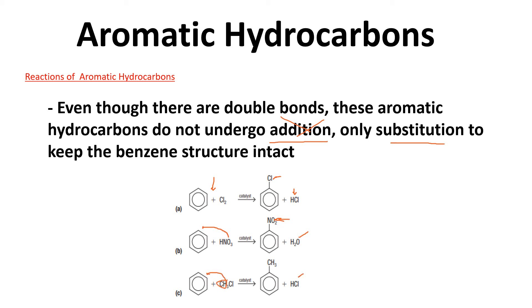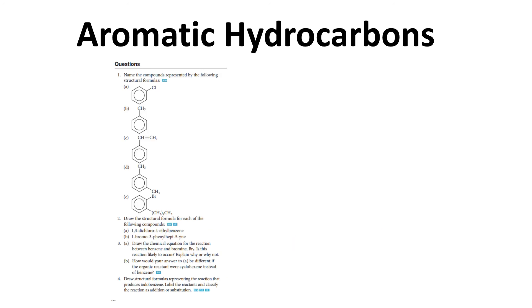Notice that in all three reaction examples, a hydrogen is removed from the ring — so for instance, chlorine goes on but you wouldn't produce methane as a byproduct. Here are some practice questions you should be able to answer. Pause the video, write them out and draw them, and then I'll flash the answers.